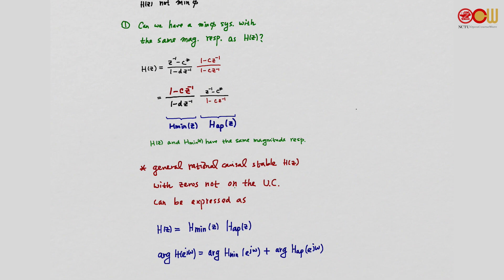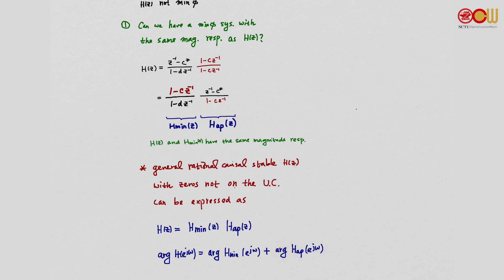In general, given any rational causal stable H with zeros not on the unit circle, we can always express it as a minimum phase system times an all-pass system. We will leave the proof as an exercise. Because of this factorization, the phase of H equals the phase of the minimum phase part plus the phase of the all-pass part, which will be very useful when studying the properties of minimum phase systems.